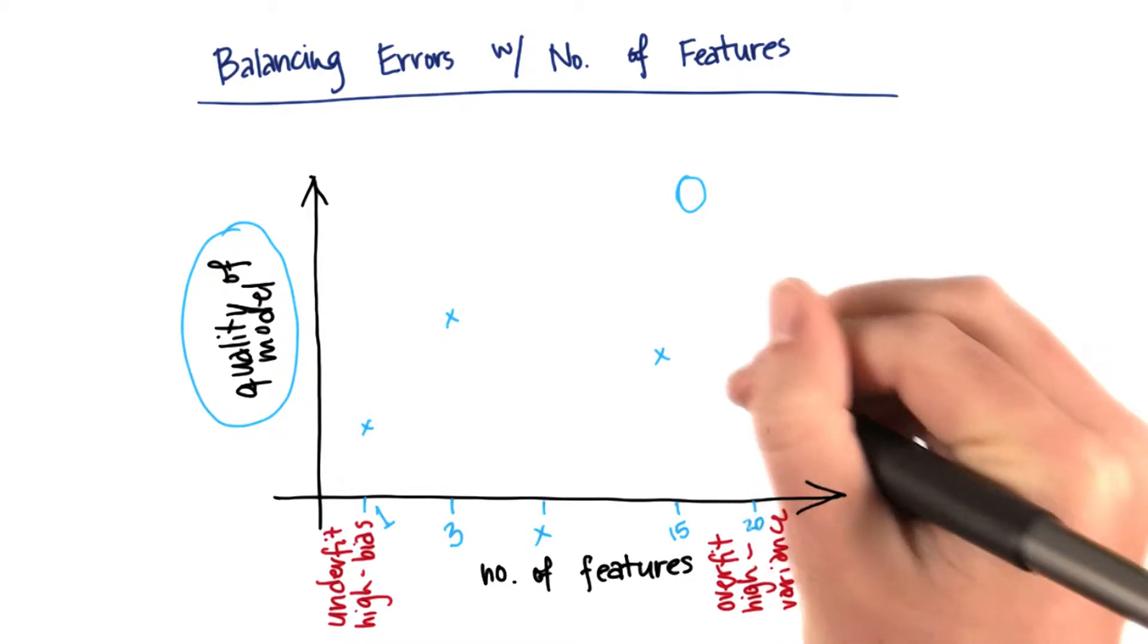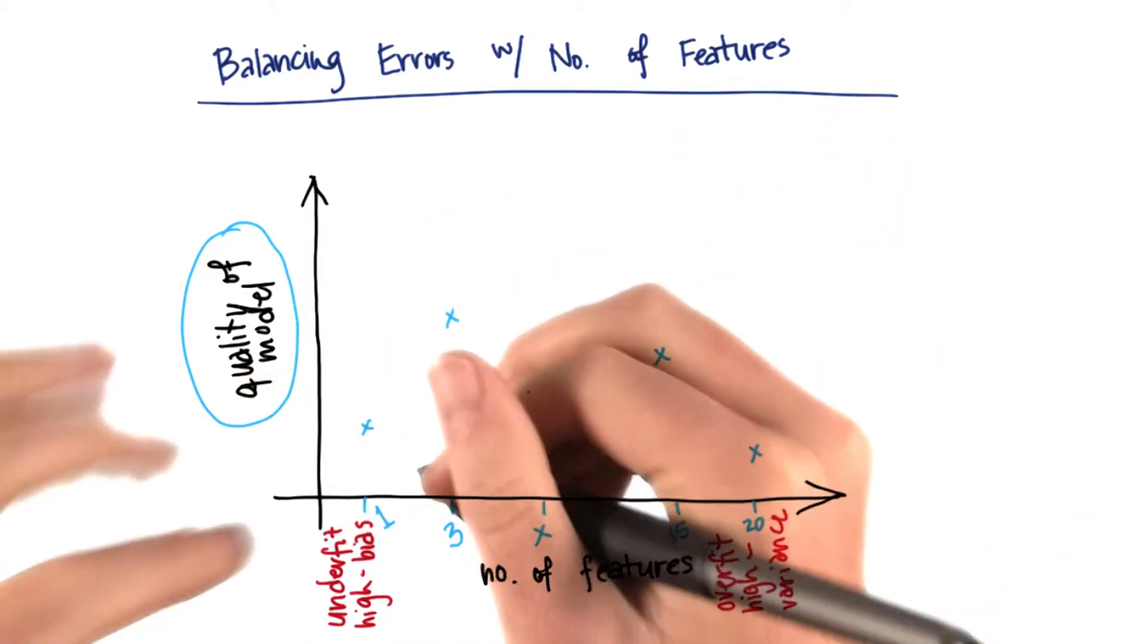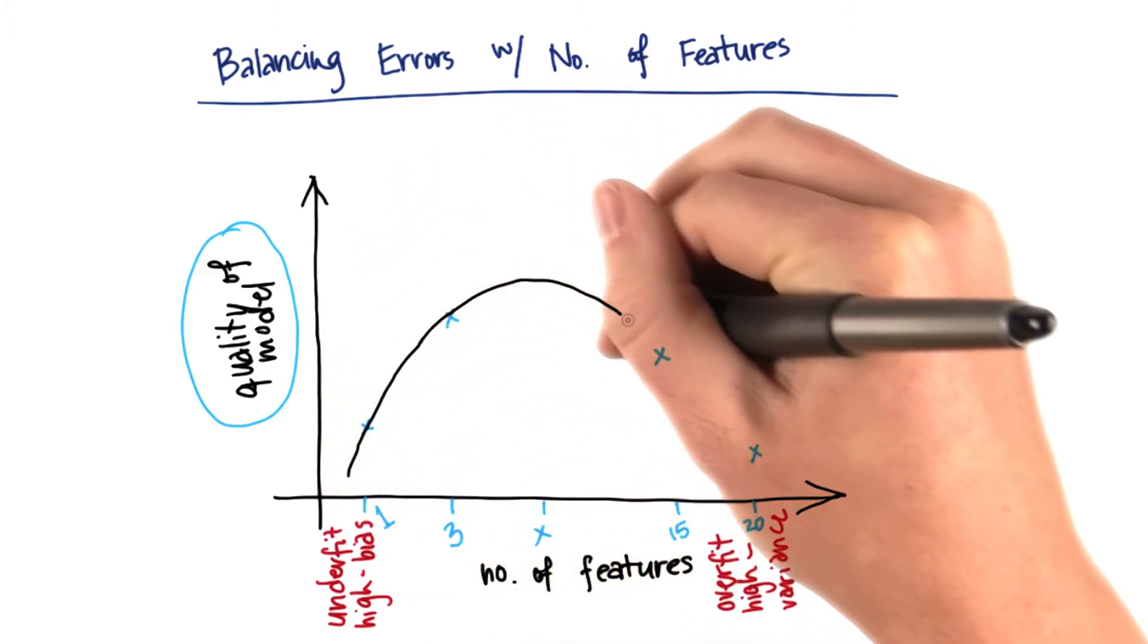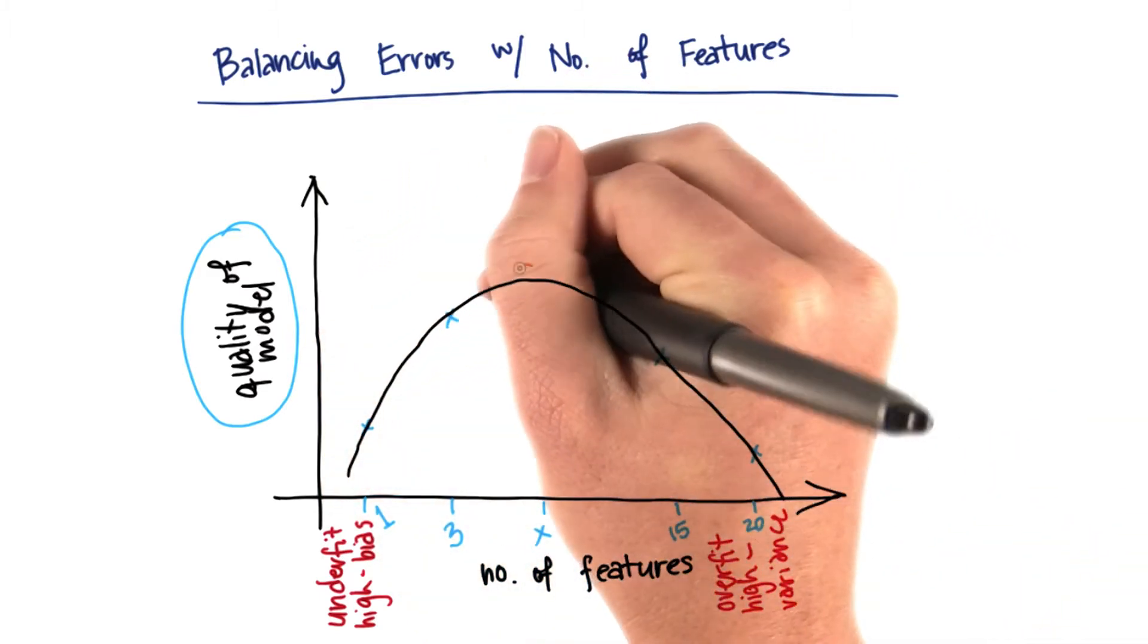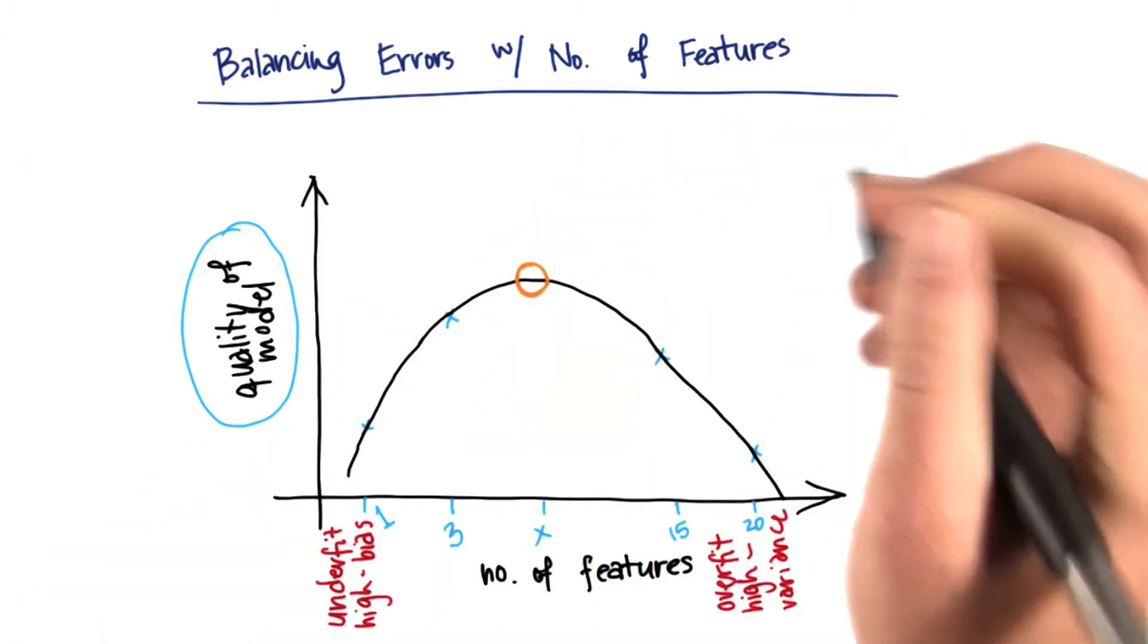And if I were to go all the way out to 20, then I might even be doing worse than if I had only one input feature. And so you could imagine that if I sort of filled out this graph for all of the possible number of features that I could get, there would be some best point where the quality of my model is going to be maximized.